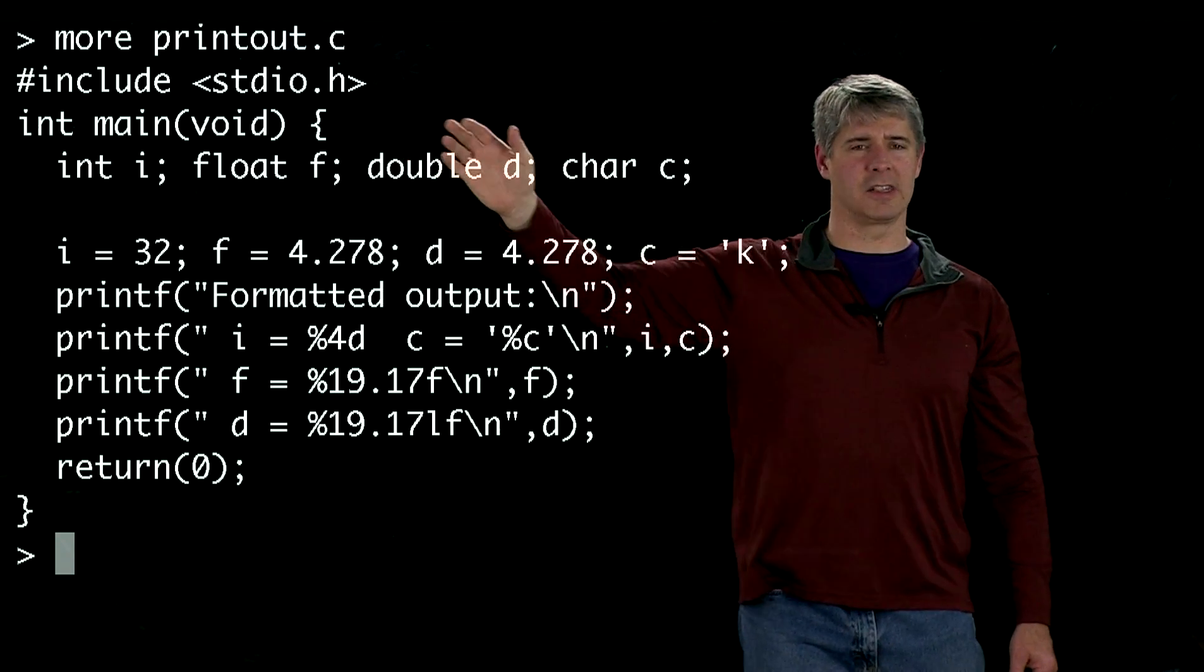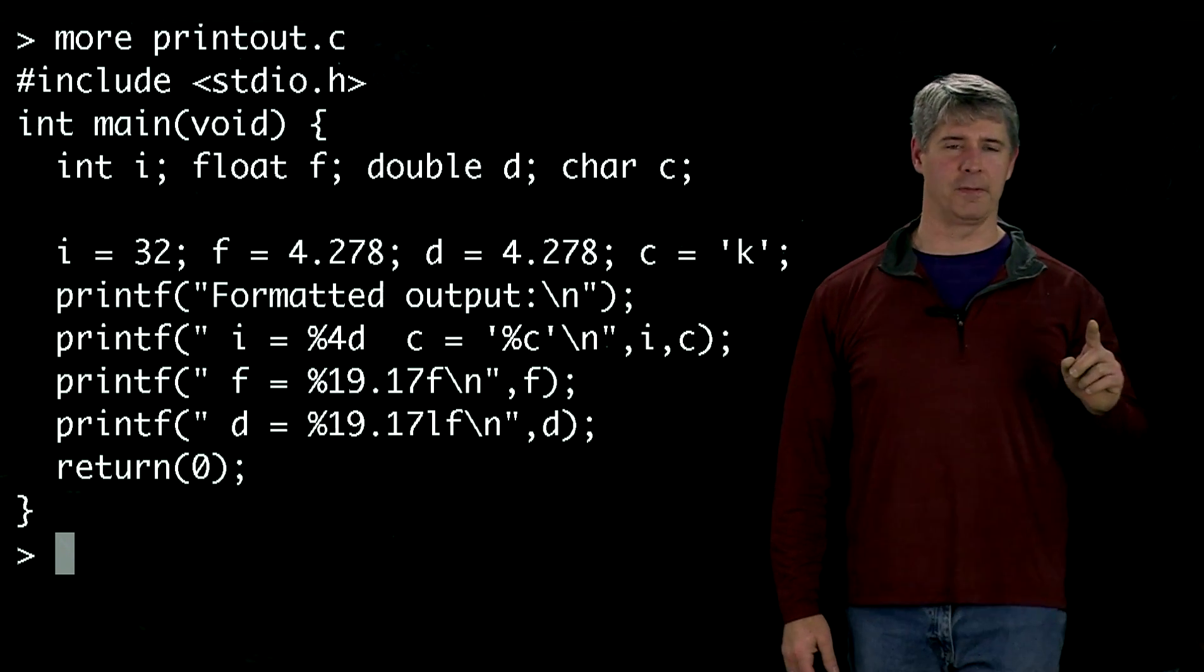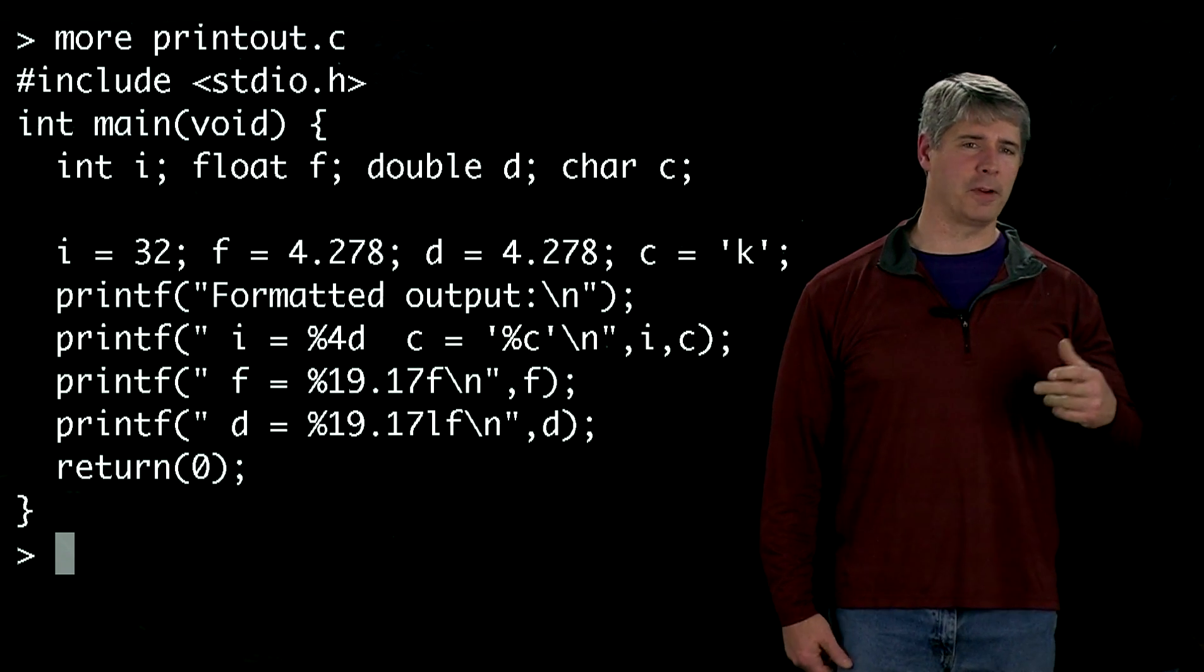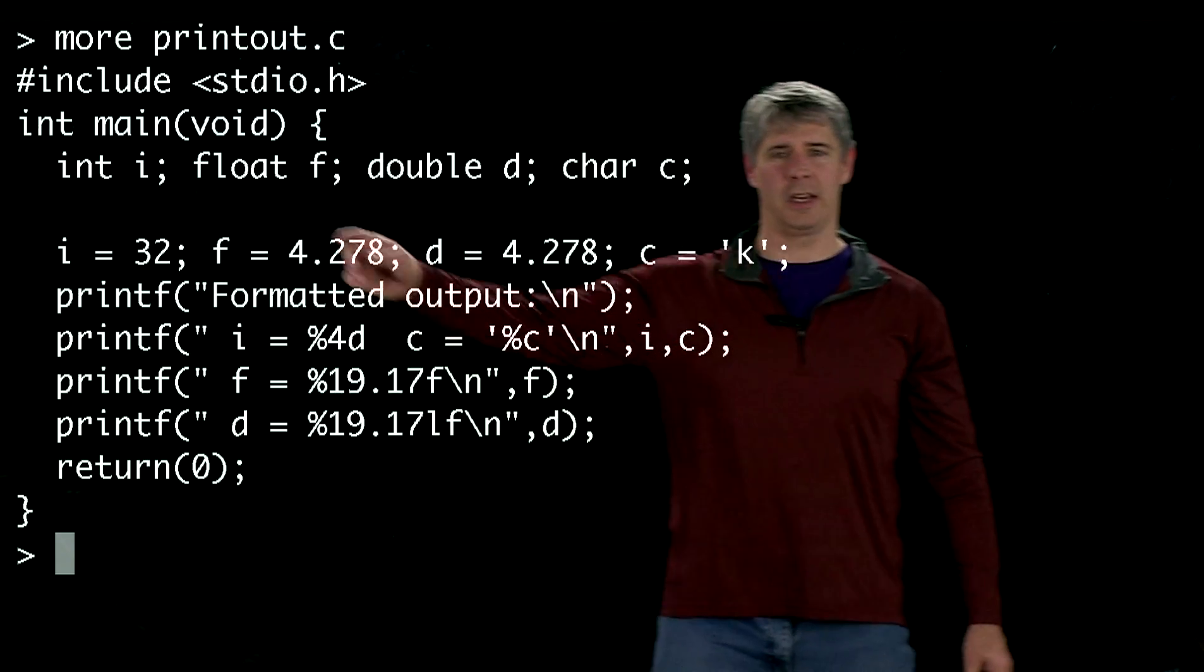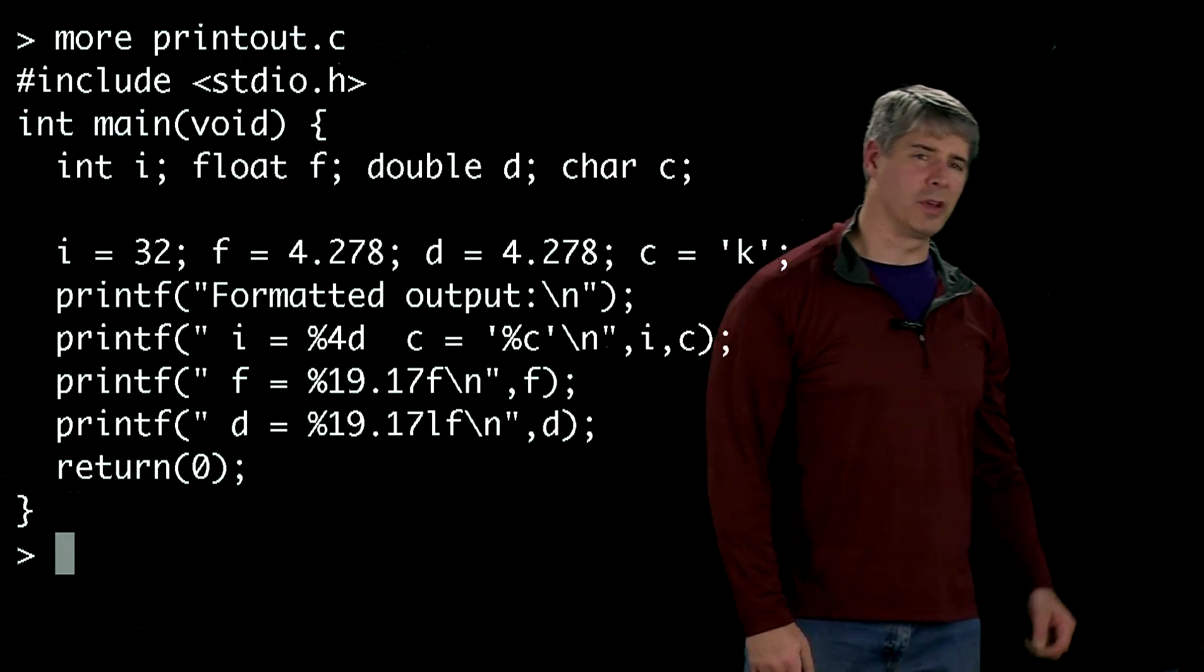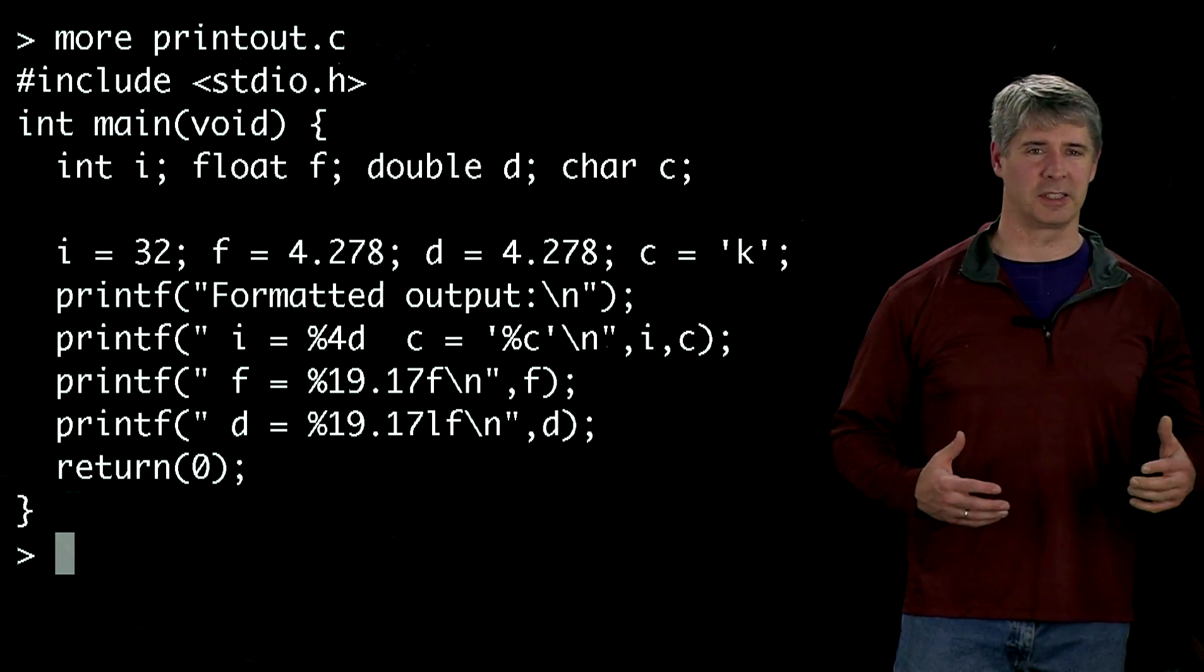The second line is our main function. Every program has exactly one main function, and that's where the program begins executing. Every function, just like a variable, has a data type associated with it, and you can see here that the data type of main is int, integer.